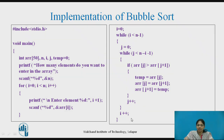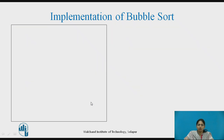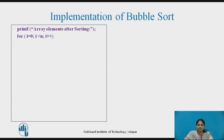The outer while loop repeats until i is less than n minus 1. Once execution comes out of the loop, all the elements of the array are sorted. In the next step, we print the sorted array elements using a loop, printing the ith element in each iteration. This completes the implementation of bubble sort using C programming.